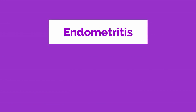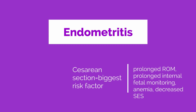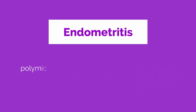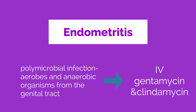The route of delivery is the single most important risk factor for developing endometritis — having a cesarean section is the biggest risk factor. Other risk factors include prolonged rupture of membranes, prolonged internal fetal monitoring, anemia, and decreased socioeconomic status. Endometritis tends to be a polymicrobial infection involving two or three aerobic and anaerobic organisms from the genital tract. Patients are admitted to the hospital and placed on broad-spectrum IV antibiotics; gentamicin and clindamycin are usually the first-line therapy.